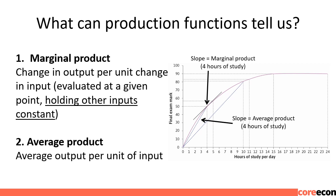If we study 10 hours, the grade is 81. If we study 11 hours, the grade is 84. So marginal product is 3 — the difference between 84 and 81. The marginal product gets smaller as the number of hours of study increases. We can also see the average product. The average product is given by the slope of the line from the origin to whichever point we are interested in. At 4 hours of study, the grade is 50, so 50 divided by 4 gives rise over run equal to 12.5. The average product is also falling, like the marginal product.